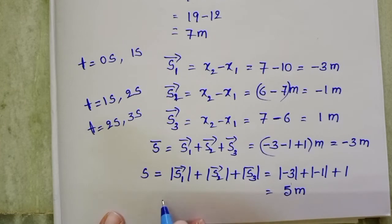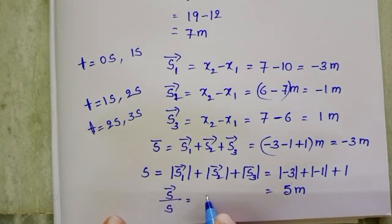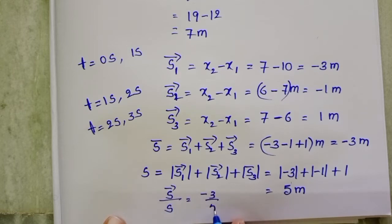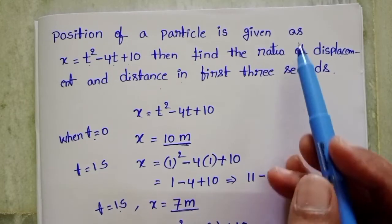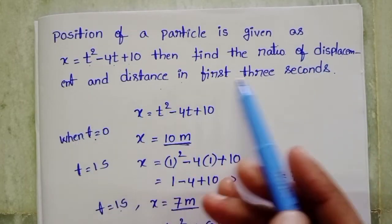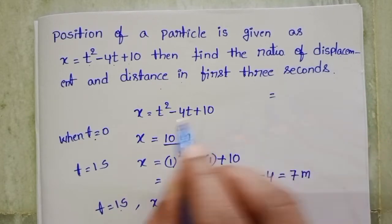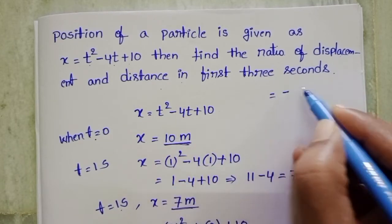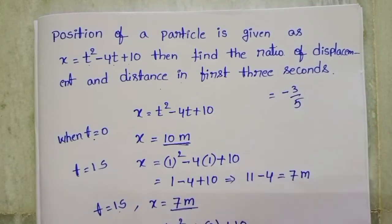The ratio of displacement to distance equals minus 3 by 5. So the ratio of displacement and distance in the first 3 seconds is −3/5.